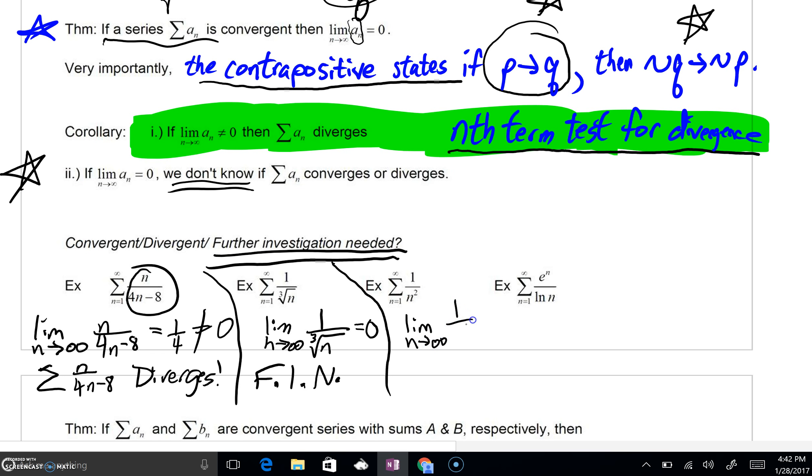Limit as n goes to infinity of 1 over n squared. In a very similar way, you can say this is going to zero. Again, further investigation is needed. We really don't know what to say at this point.